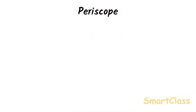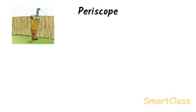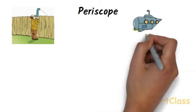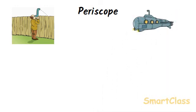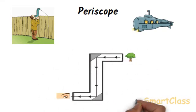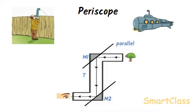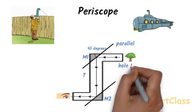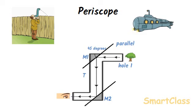Periscope: A periscope is a device which gives a higher view than normal. Through a periscope we can see objects on the other side of a high wall without having to climb over it. Also, by using a periscope, a person sitting in a submarine can see ships over the surface of the sea. A periscope consists of a long tube T having two plane mirrors M1 and M2 fitted at its two ends. The two plane mirrors are arranged parallel to each other, and each plane mirror makes an angle of 45 degrees with the side of the tube. There are two holes in the periscope tube — one in front of the top mirror M1 and the other in front of the bottom mirror M2. A periscope works on the reflection of light from two plane mirrors arranged parallel to one another.